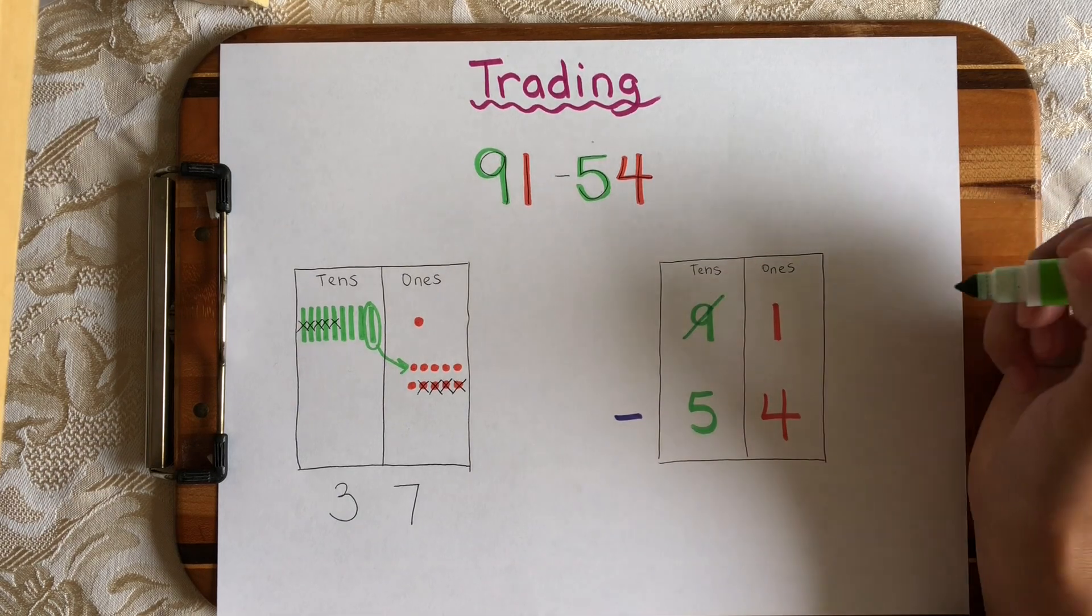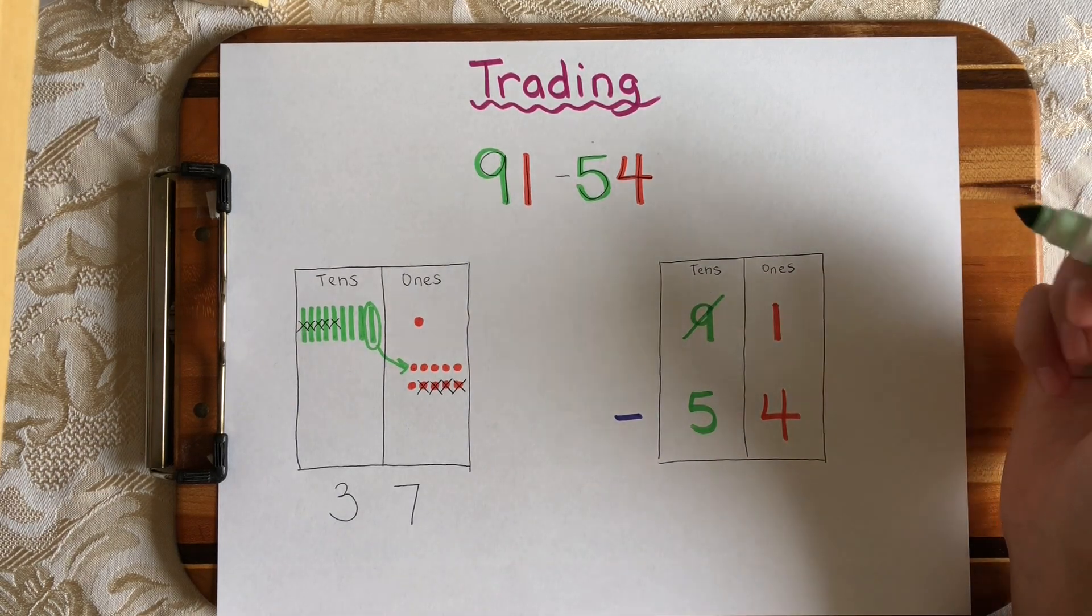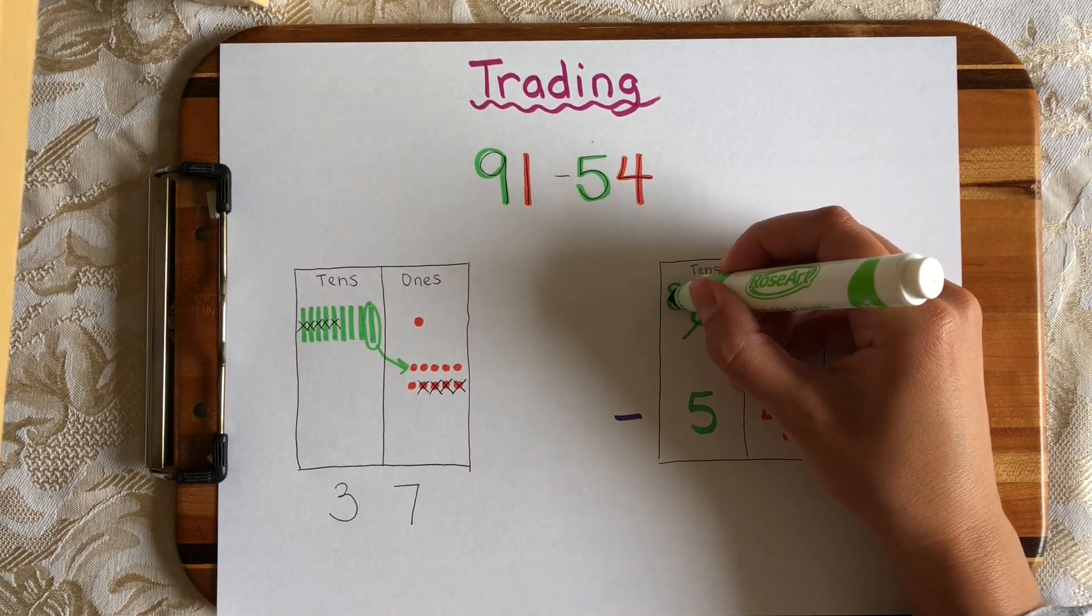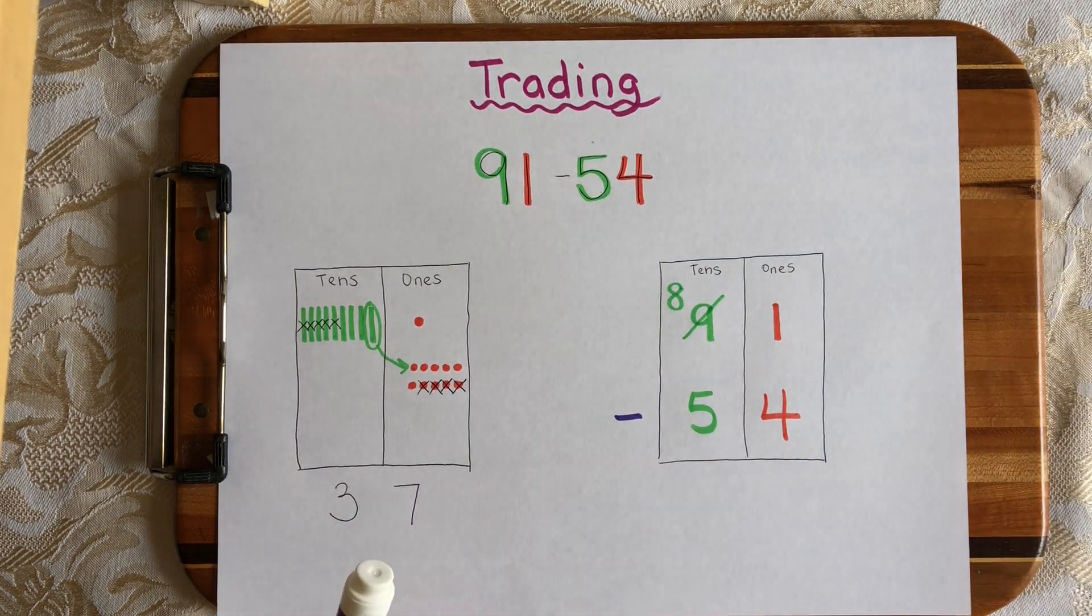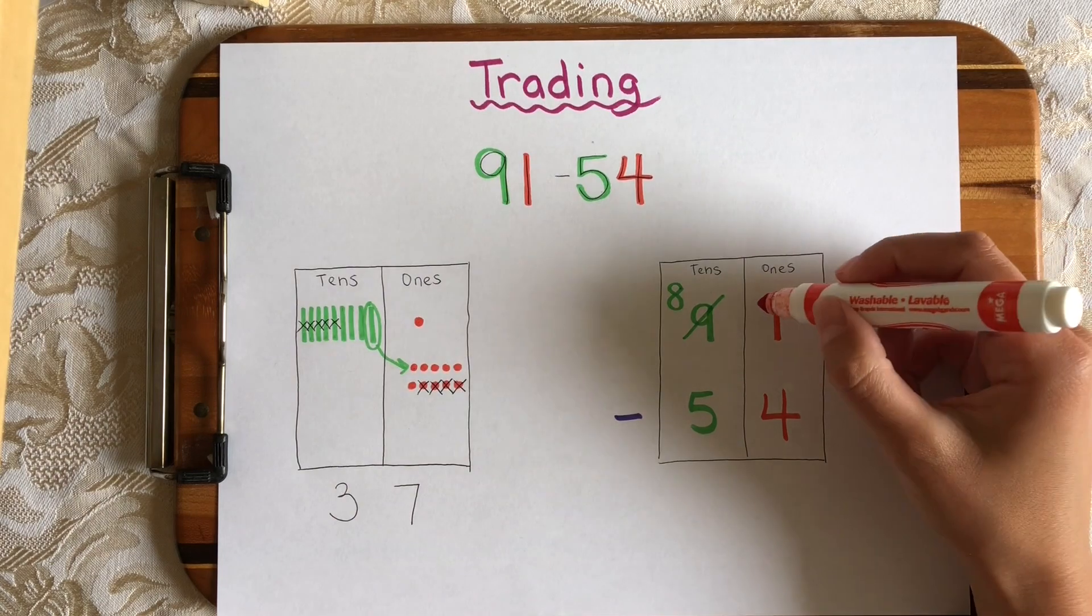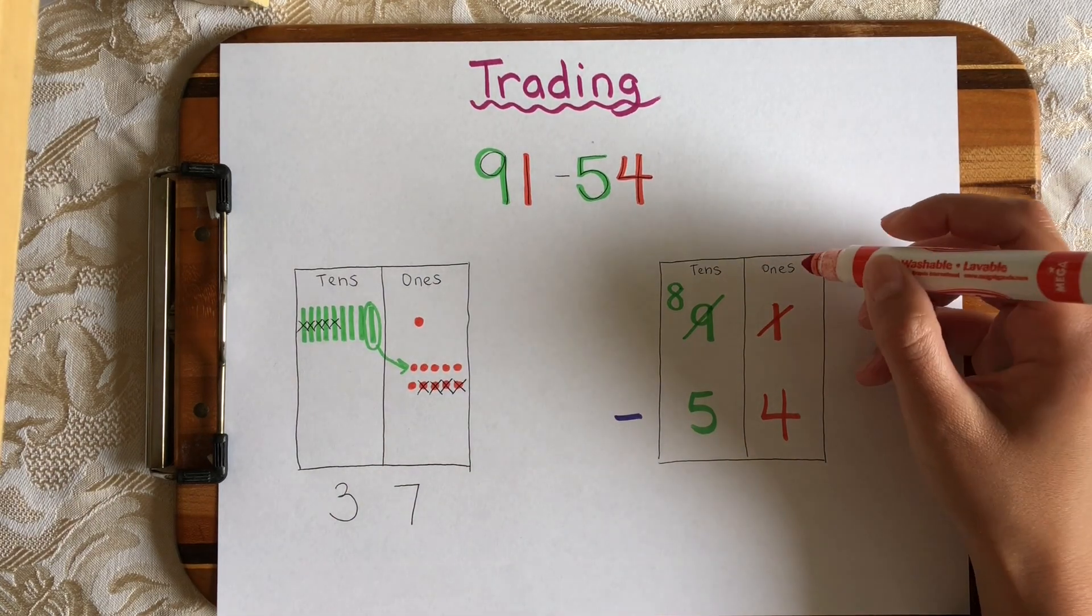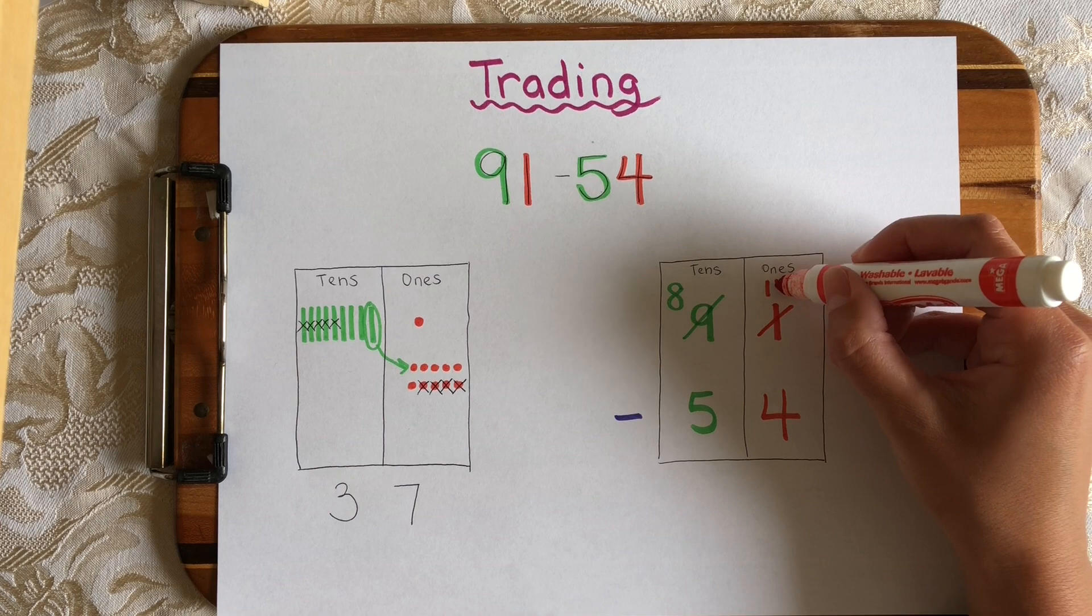So I'm going to take one of those 10s from 9 and that will leave 8 tens over here. And that means that 10 came over and joined this 1 over here and 10 plus 1 is 11.